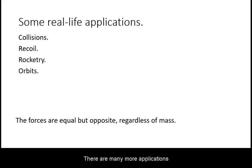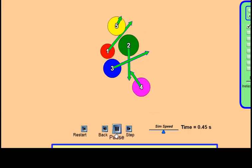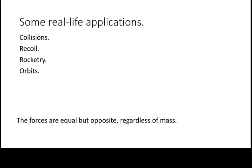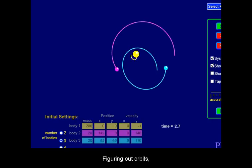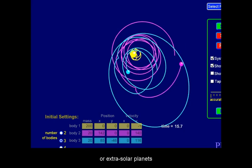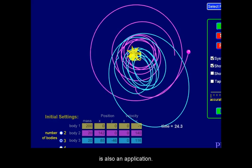There are many more applications of Newton's third law other than just collisions. The recoil of a gun is a common example. The basis of rocketry is an important application. Figuring out orbits to figure out masses of stars or extrasolar planets is also an application.